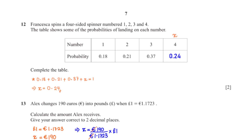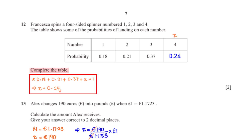Francesca spins a four-sided spinner numbered 1 to 4. The table shows some probabilities of landing on each number. Complete the table. Let the probability of landing on 4 be x. The probabilities must sum to 1: 0.18 + 0.21 + 0.37 + x = 1. Solving gives x = 0.24.